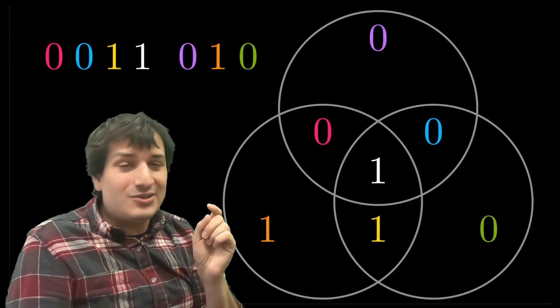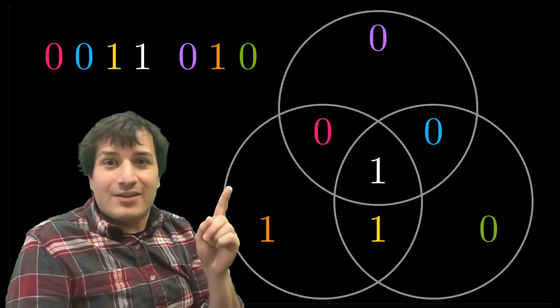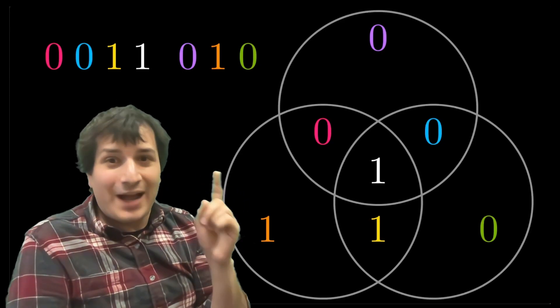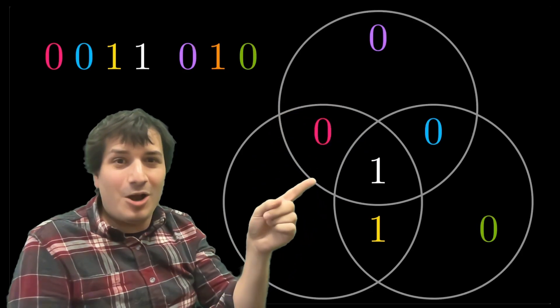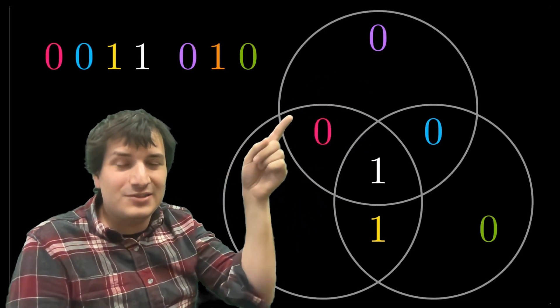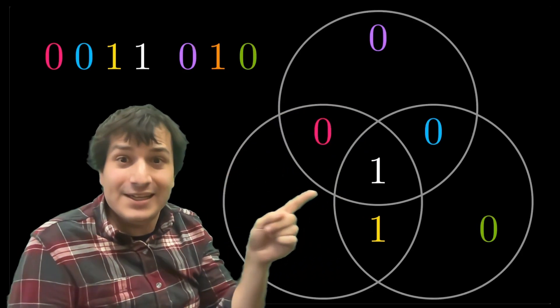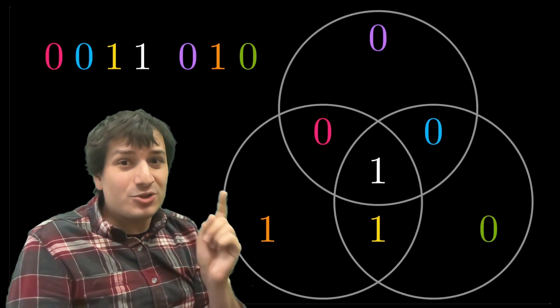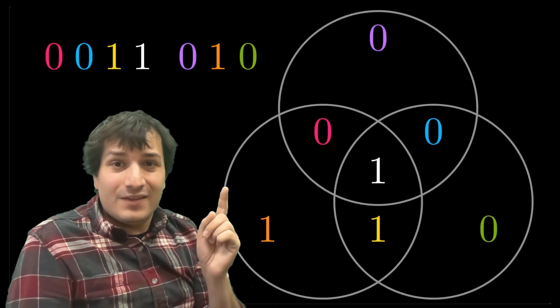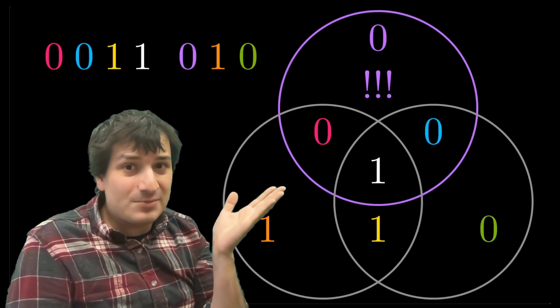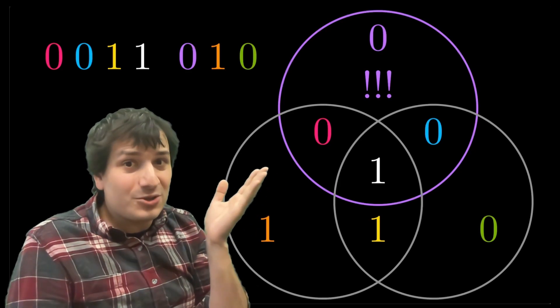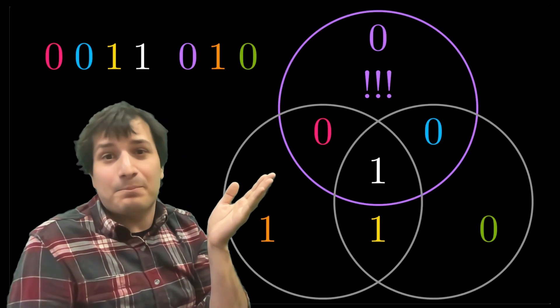And Bob looks at the circles and immediately notices the most important rule is violated. That rule that says the sum of every circle must be even is wrong in the top circle. Look in the top circle, zero plus zero plus zero plus one is an odd number. So Bob knows for sure somewhere in this circle, there is a mistake. There's a mistake somewhere in here. Bob doesn't know which of these bits is wrong, but he knows for sure there's a mistake somewhere in that purple circle at the top.